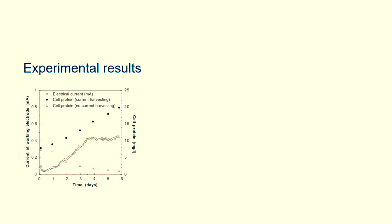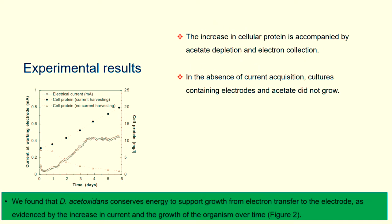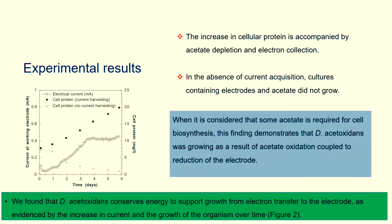Other researchers found that deacetoxidins conserves energy to support growth from electron transfer to the electrode, as evidenced by the increase in current and the growth of the organism over time, figure 2. The increase in cellular protein is accompanied by acetate depletion and electron collection. In the absence of current acquisition, cultures containing electrodes in acetate did not grow. When it is considered that some acetate is required for cell biosynthesis, this finding demonstrates that D. acetoxidins was growing because of acetate oxidation coupled to reduction of the electrode.